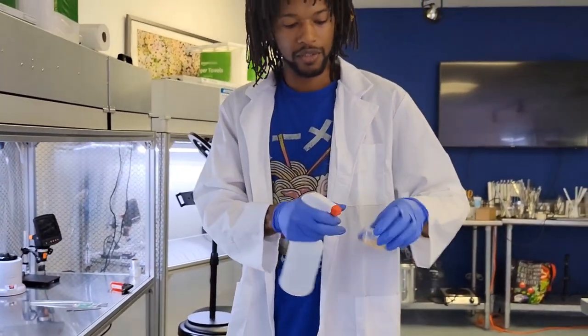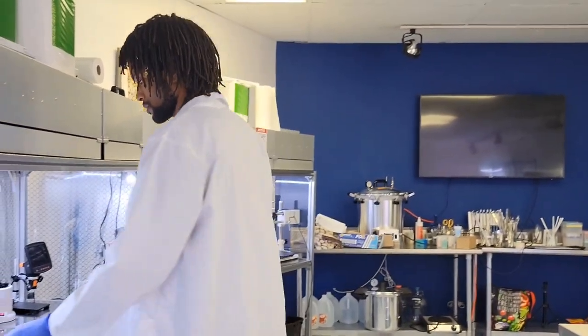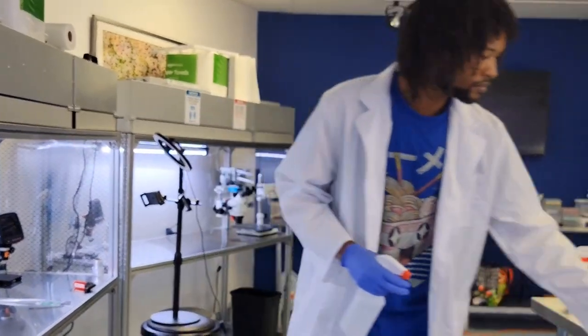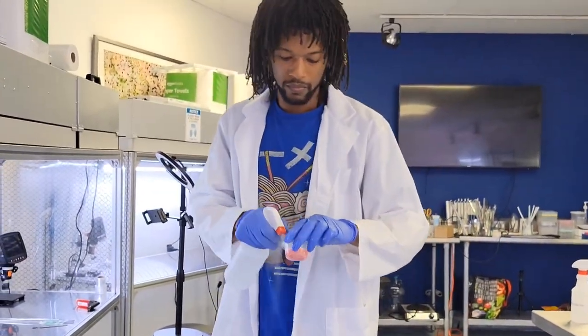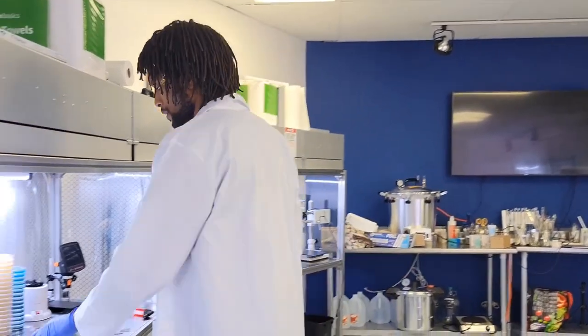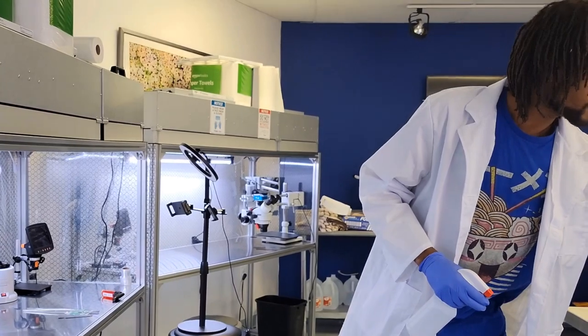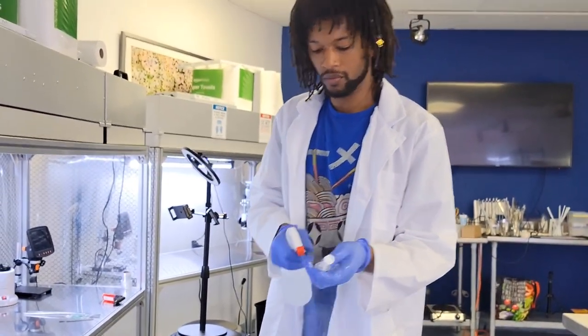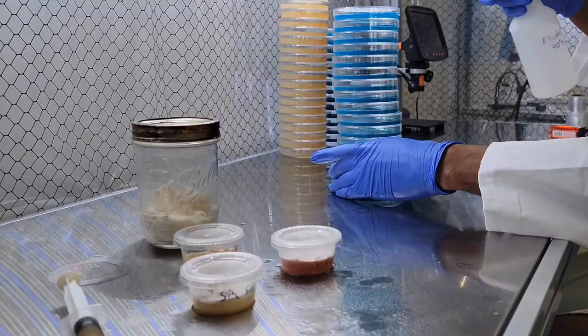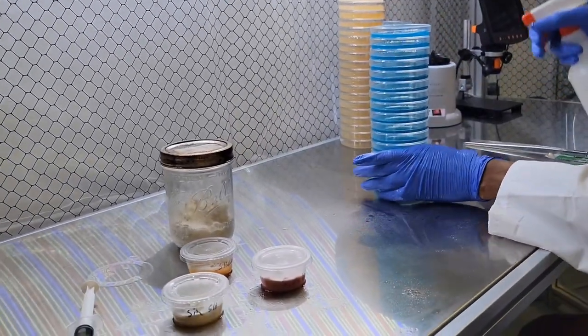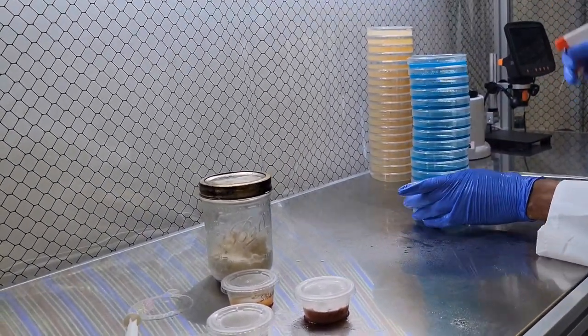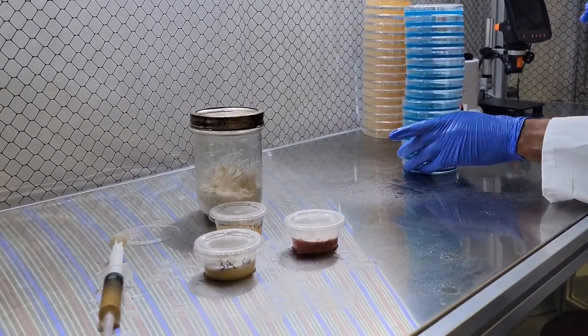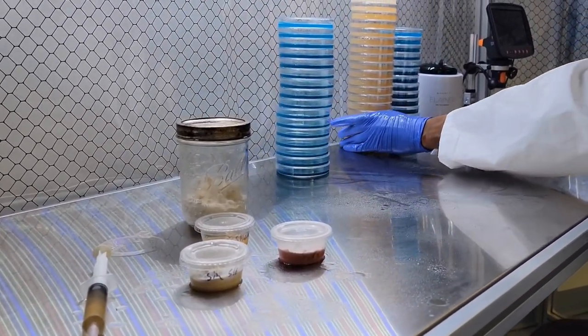This is the senens black reishi. This is what I call the sidewalk reishi, the one I found growing out of a crack on the sidewalk. This is lion's mane on liquid culture. Just a light spray. These have been sitting inside of the flowhood since I made them in the last video.